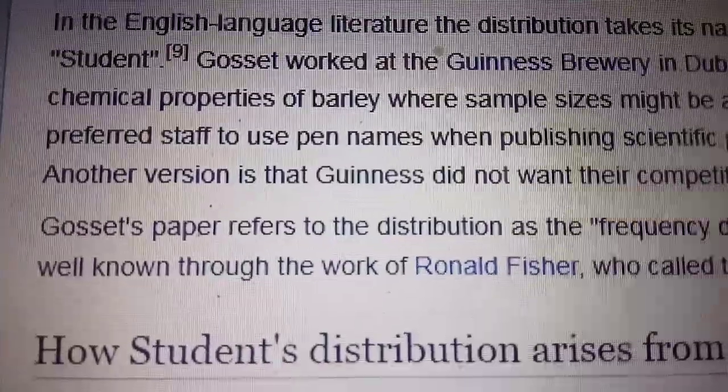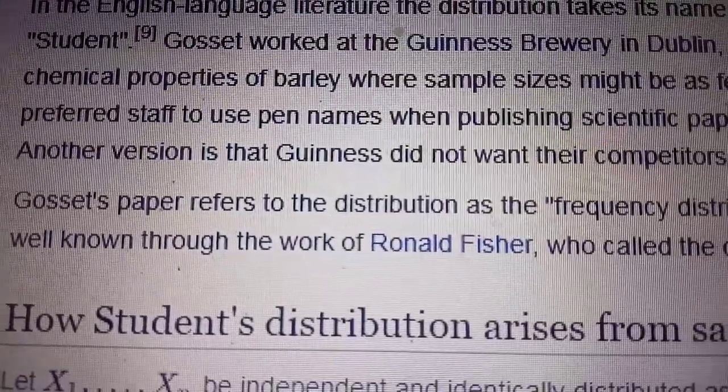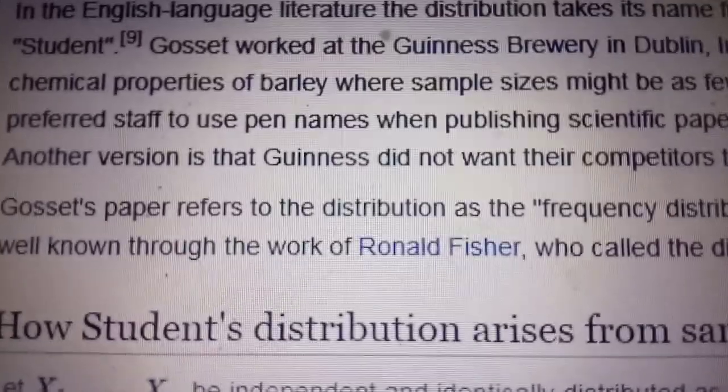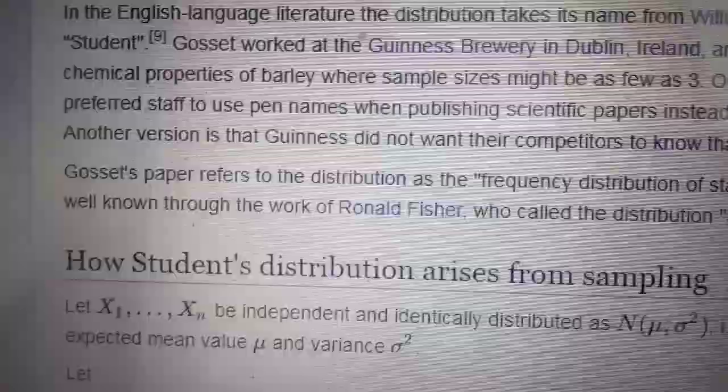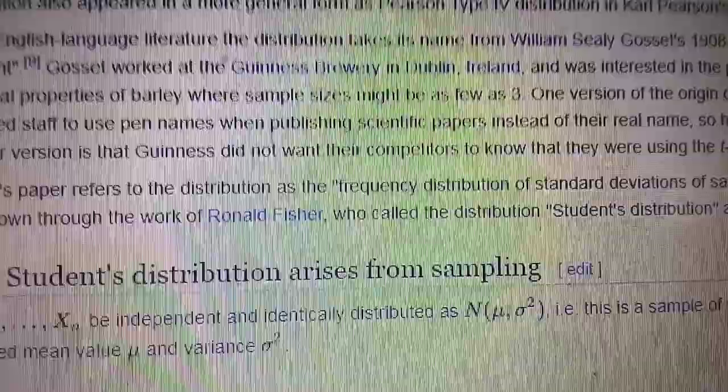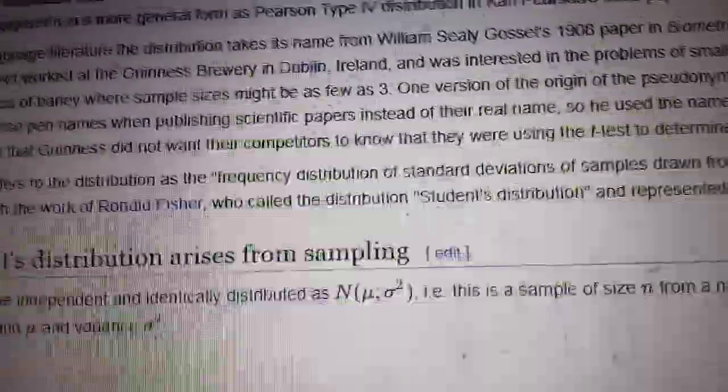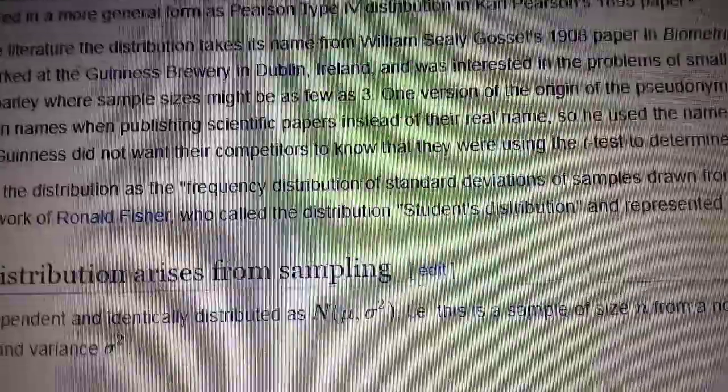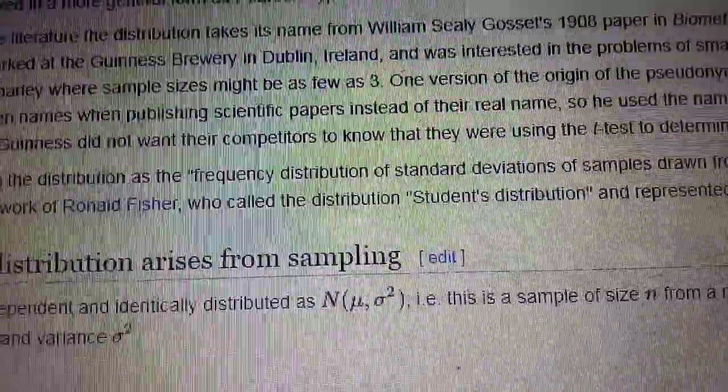Gosset's paper later became famous because of another very renowned statistician, namely Ronald Fisher, who worked on this distribution and referred to it as the Student's t-distribution. That is how it derives its name.